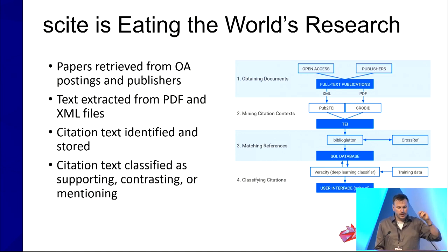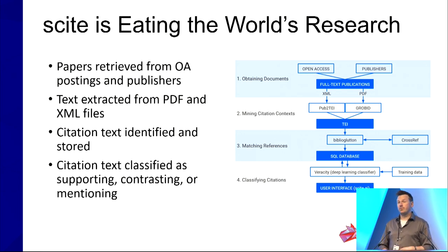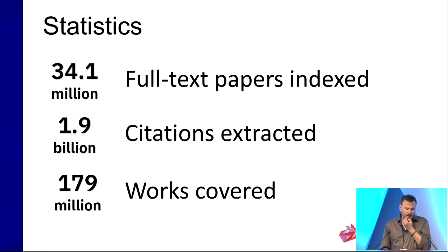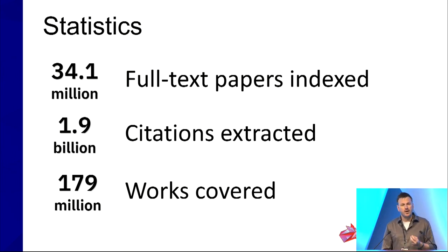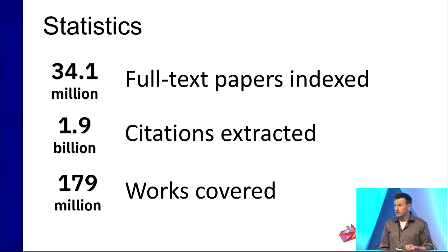We store those in a database, and then we have a deep learning classifier that classifies each citation as one of three categories: supporting — we successfully replicated this finding; contrasting — we did not find evidence consistent with this finding; or mentioning — where you cite something but not in an evaluative context. As of today, we've indexed 34.1 million scientific papers and extracted 1.9 billion citations. Our database covers 179 million works, enriched with sources like OpenAlex.